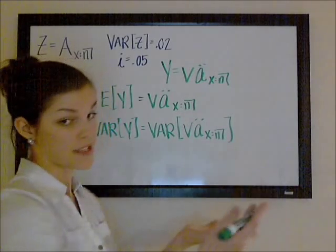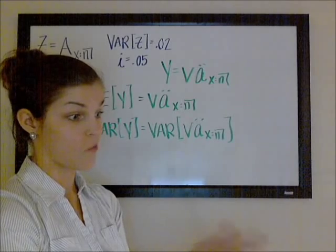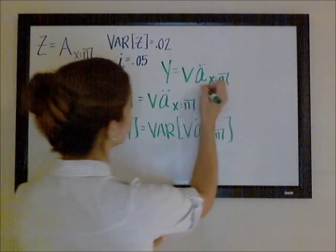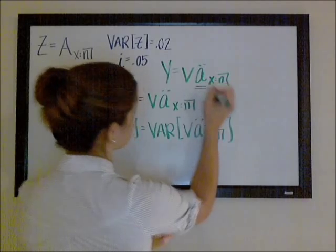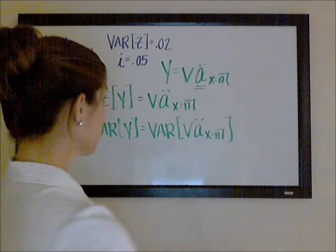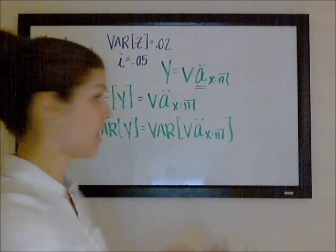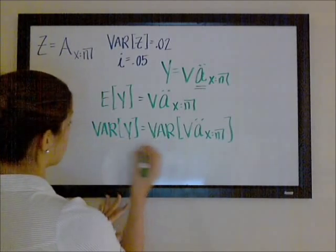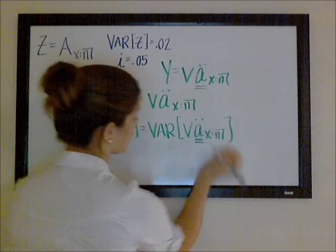One way that you can indicate that it's the actual present value, that it's the true present value, like if you knew exactly when they were going to die, or how their lifetime was distributed, is you can put two lines underneath it. I'm going to go ahead and do that. So what we're really looking for is the variance of this.